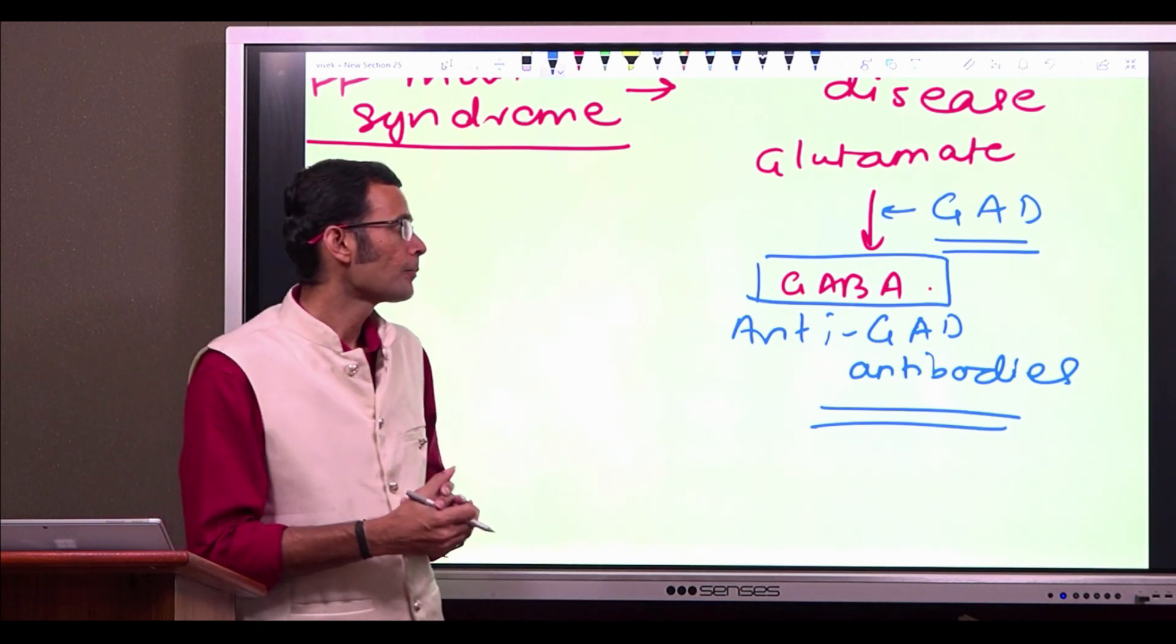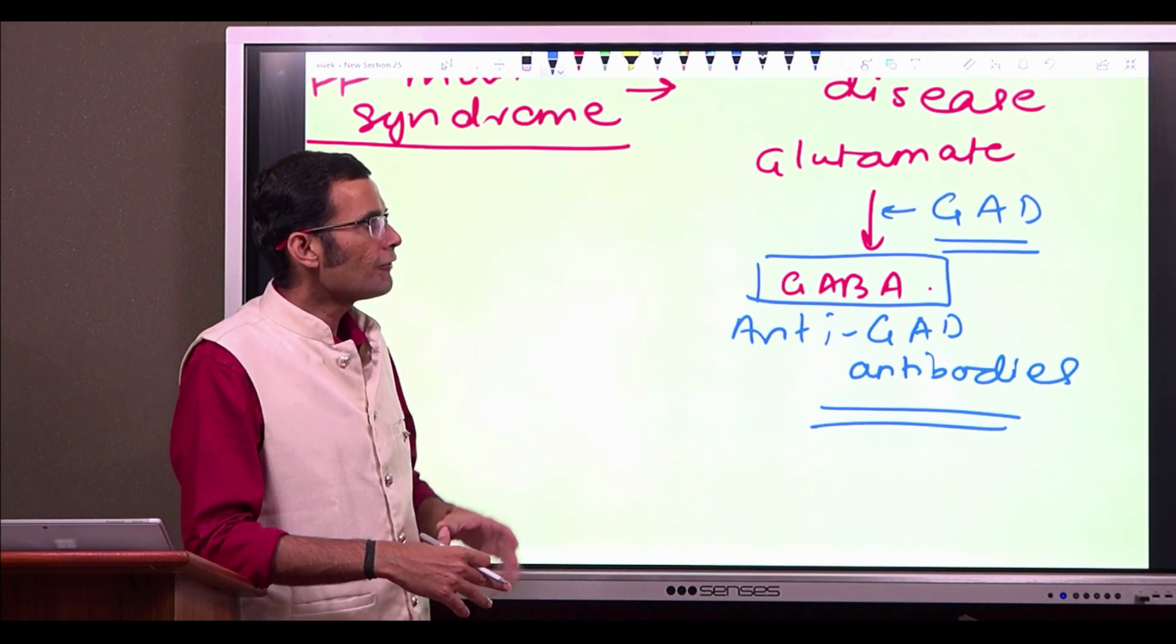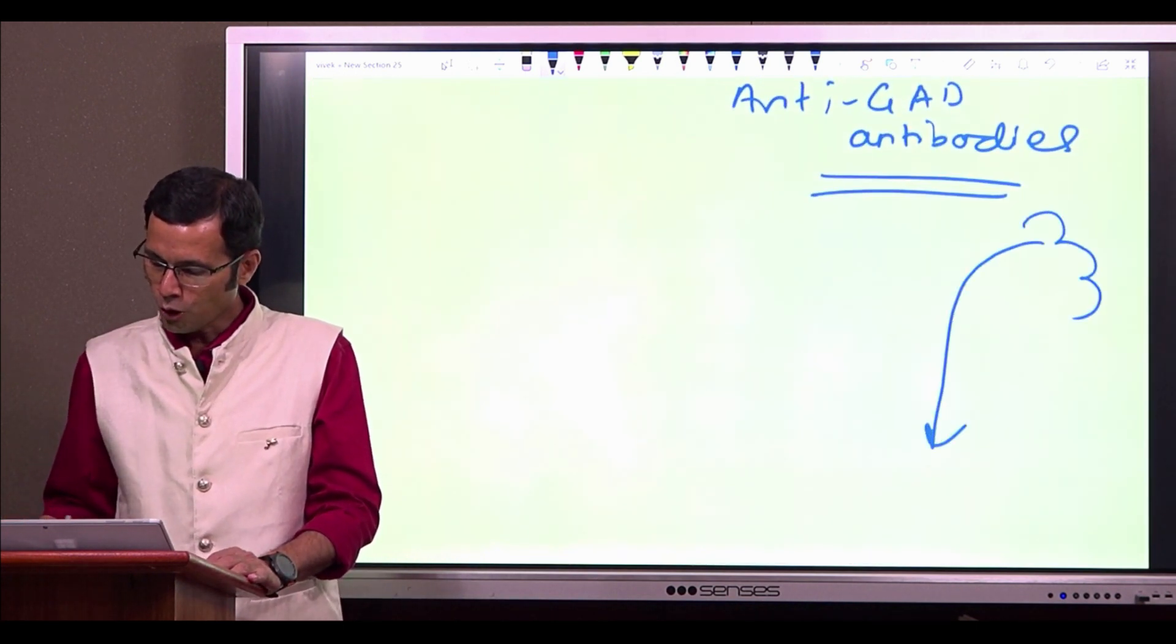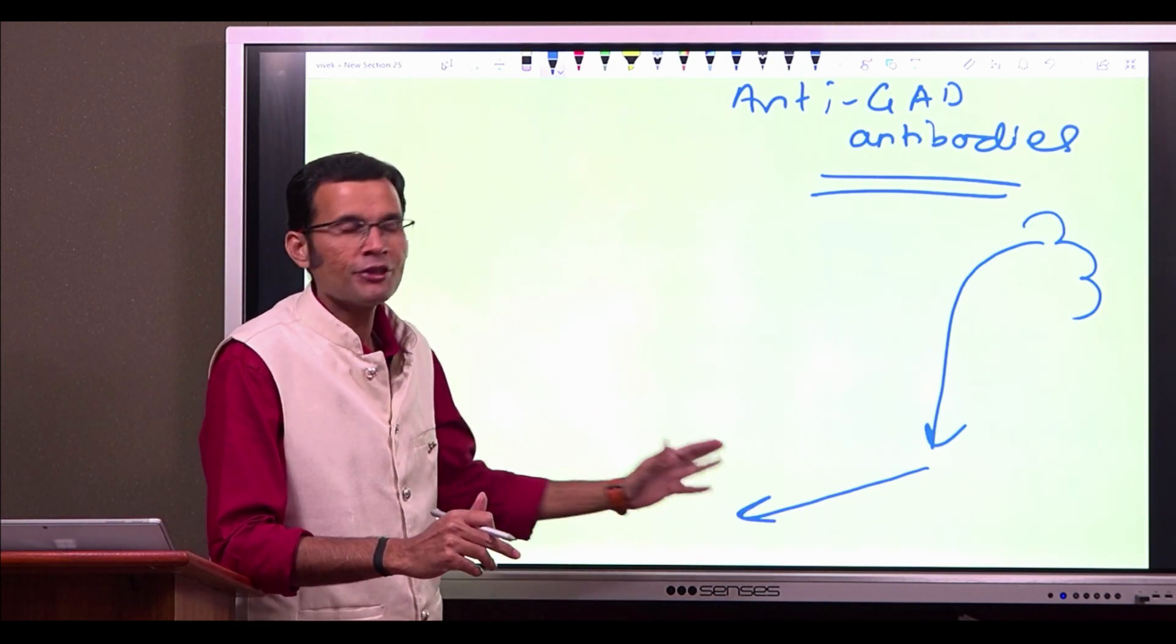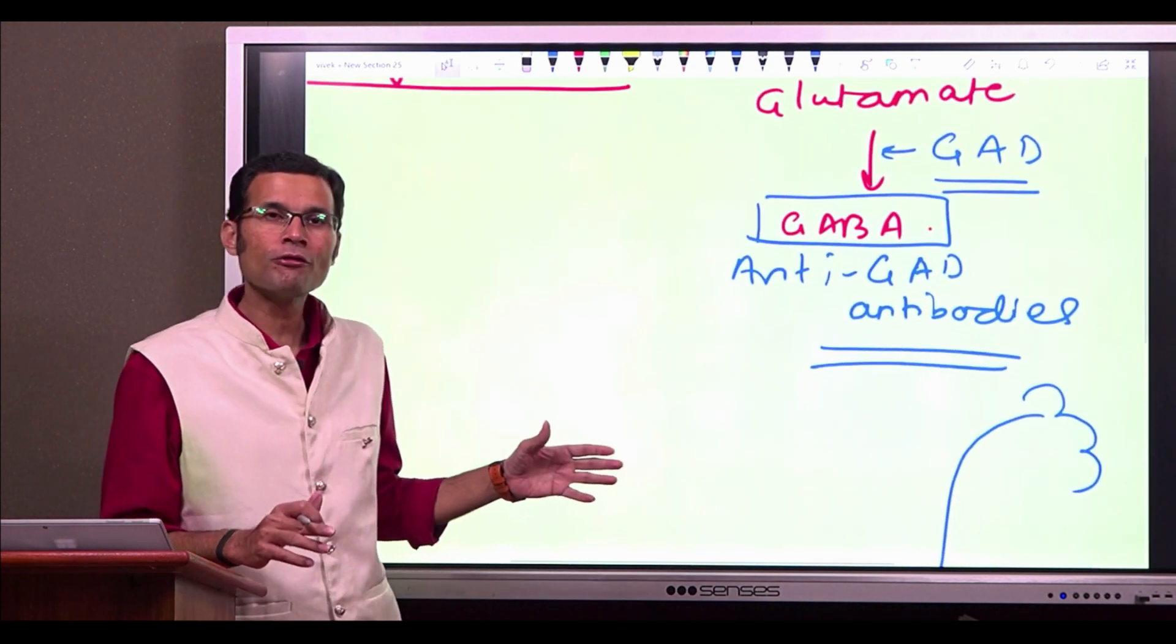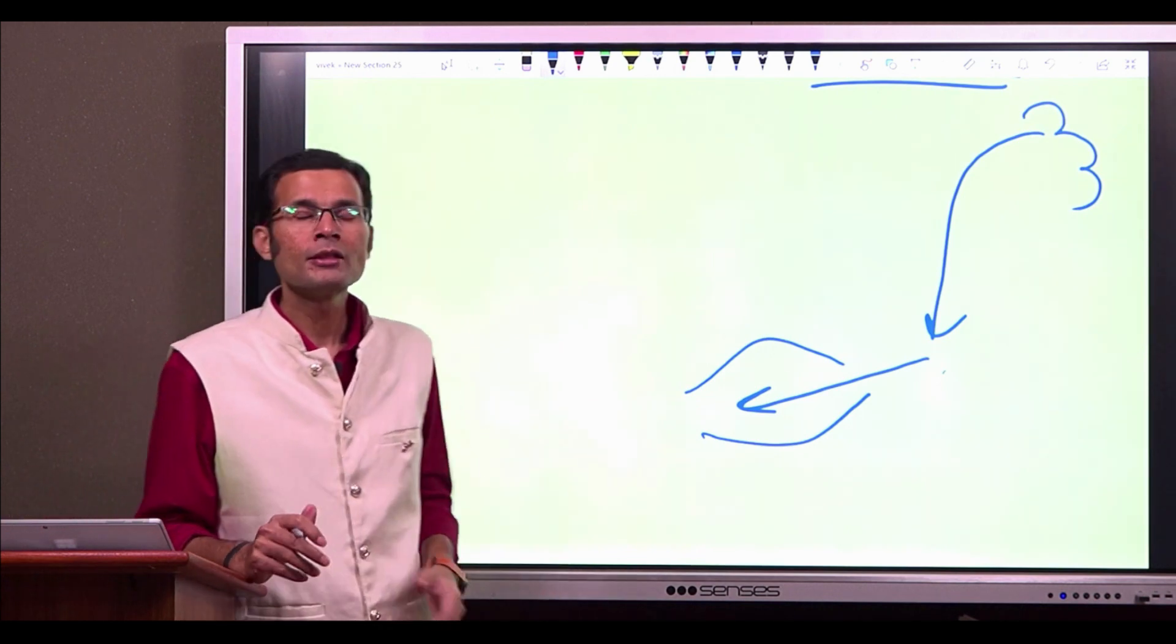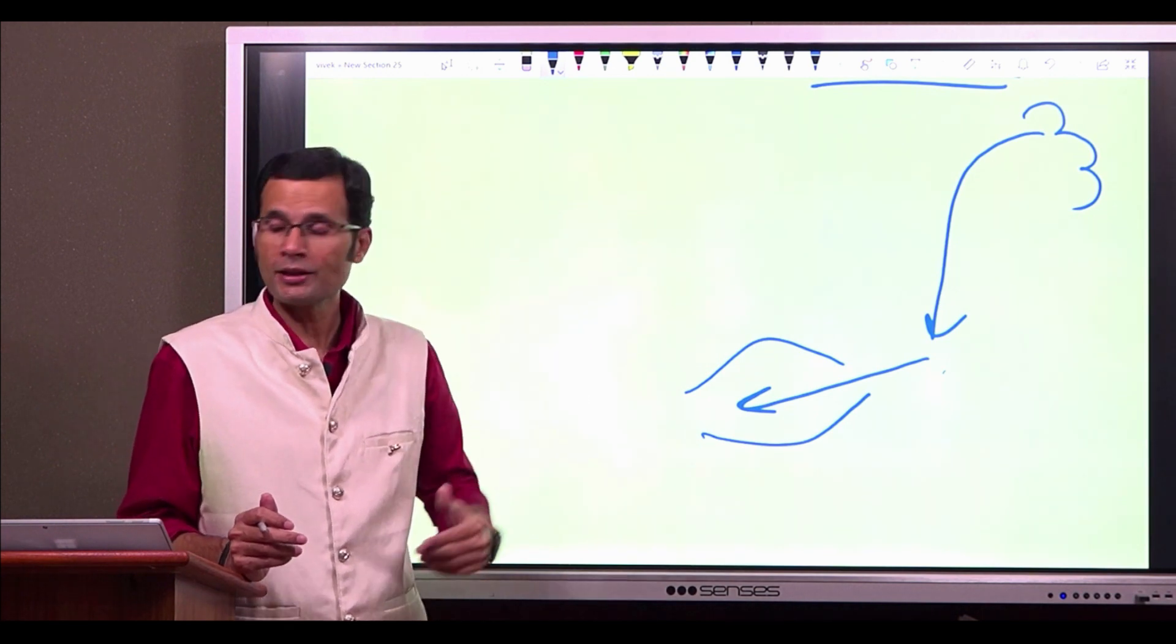So I just repeat once again, GABA, the inhibitory neurotransmitter in the brain or in the CNS, if it is deficient, that means the inhibitory transmission coming from the upper motor neuron onto the lower motor neuron, that also would be deficient. And as a result of this, since there is no inhibition of the lower motor neuron going to the muscle, this lower motor neuron which is reaching the muscle, it is not getting that inhibitory impulse from the upper motor neuron, from the higher centers.